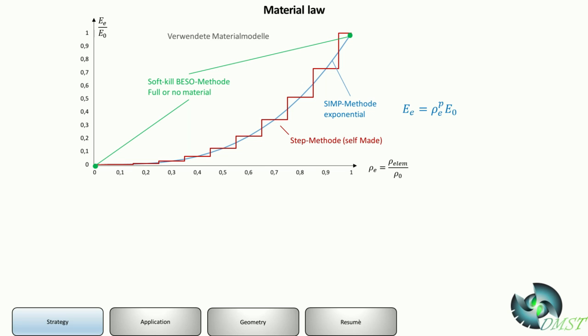The BESO method means there's no material and there is material, but there's nothing between. The other one, the standard one, is the SIMP method. This means there's an exponential equation which defines the elasticity, the Young's modulus. The other one is the step method. I did it by myself because I needed it for my tool.